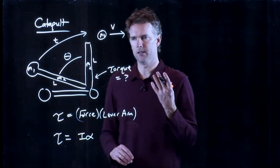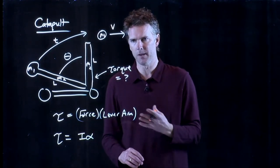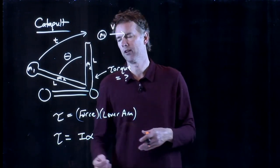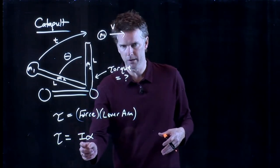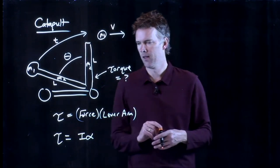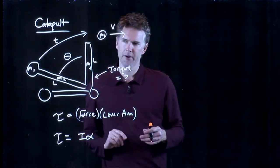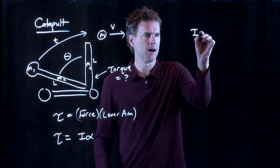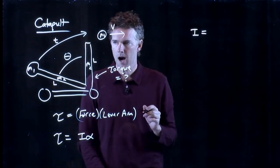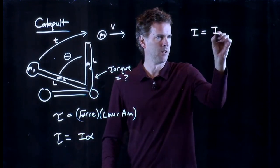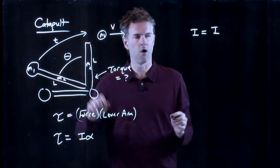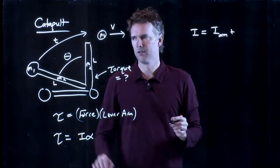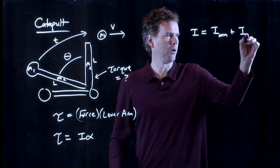Torque is equal to I times alpha. This is the analogy of F equals MA. F equals MA. In rotational kinematics, it becomes torque equals moment of inertia times angular acceleration. And this stuff, maybe we can figure out. Certainly we know I. I is I of this arm